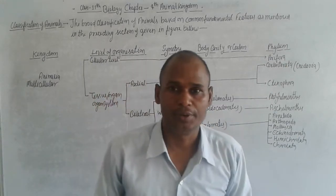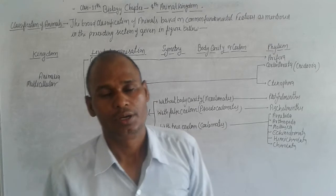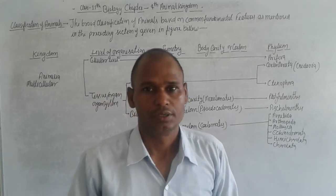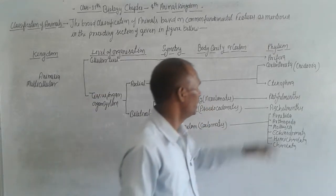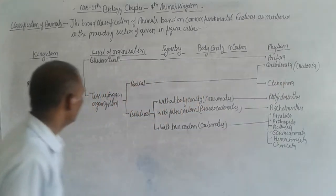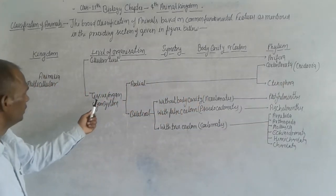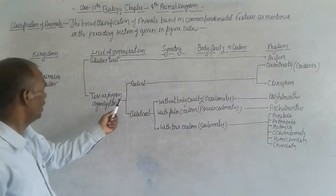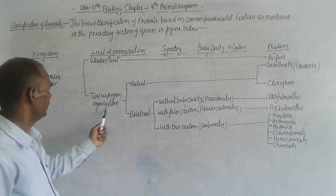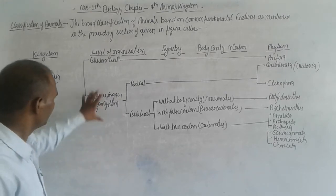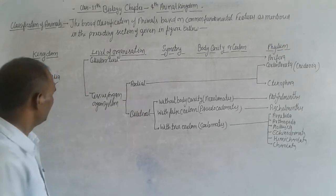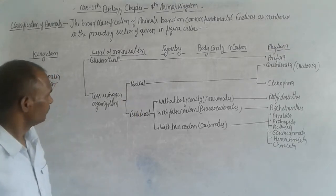In Phylum Porifera belong some animals like Sycon, Leucosolenia, etc. And again, tissues, organ and organ system — tissue, organ and organ system levels of organization.